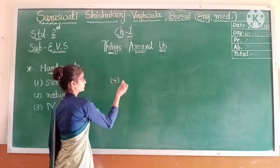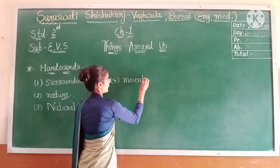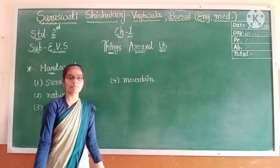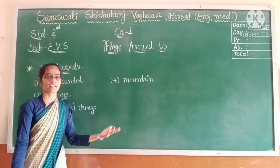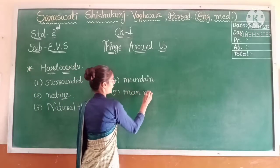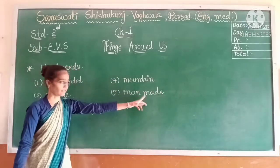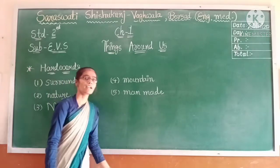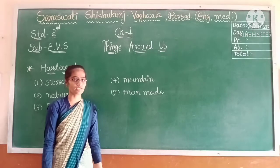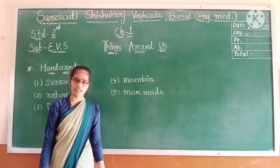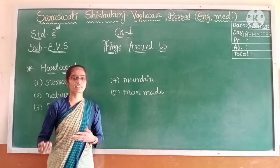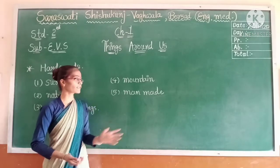Number four: M-O-U-N-T-A-I-N — mountain. Mountain means parval. Mountains are also part of nature. Next: M-A-N-M-A-D-E — man-made things. Such things that are made by human are called man-made things. For example, clothes, buildings — these are things that are made by man. That is called man-made things.